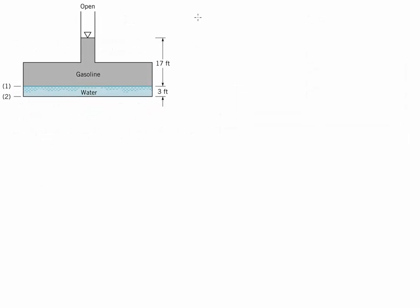Let's start with the calculation of the interface, which is point one, and we're going to use a reference point of zero which is the open point. So we write P1 is equal to the gamma of the fluid, which in this case is gasoline, times the distance between them which is going to be 17 feet, called H1, plus the reference pressure P0.